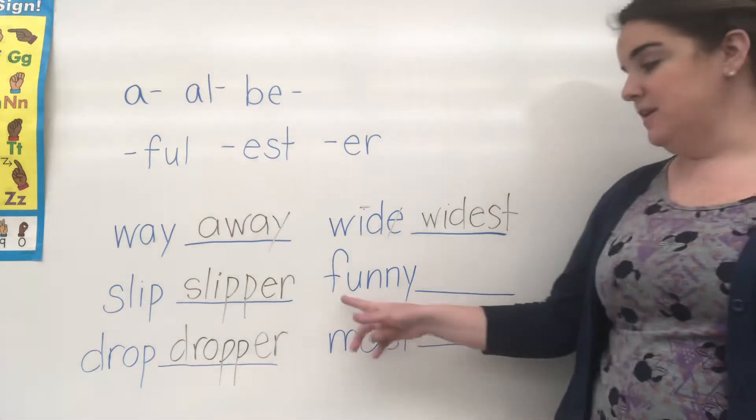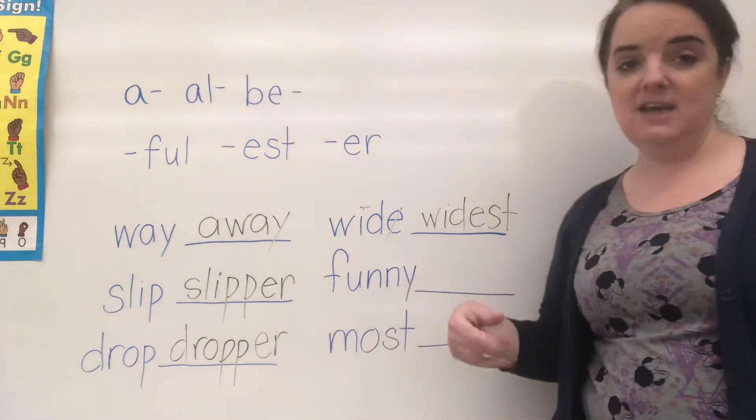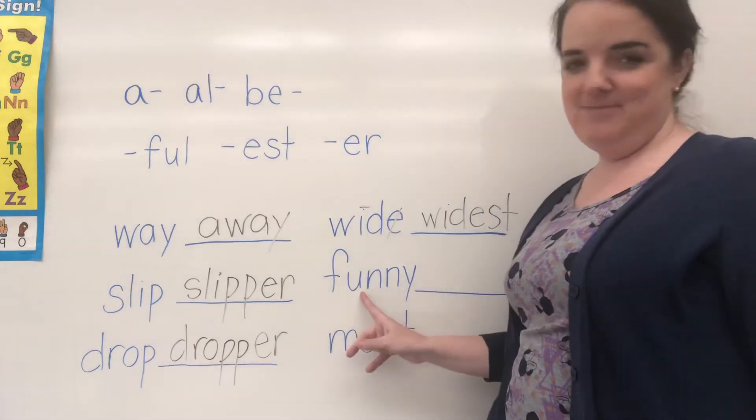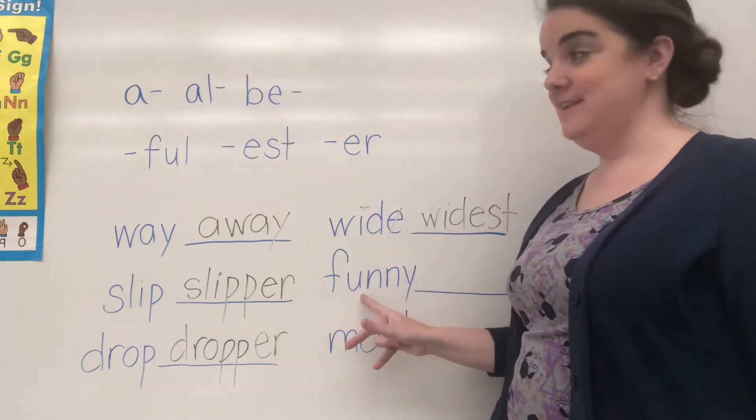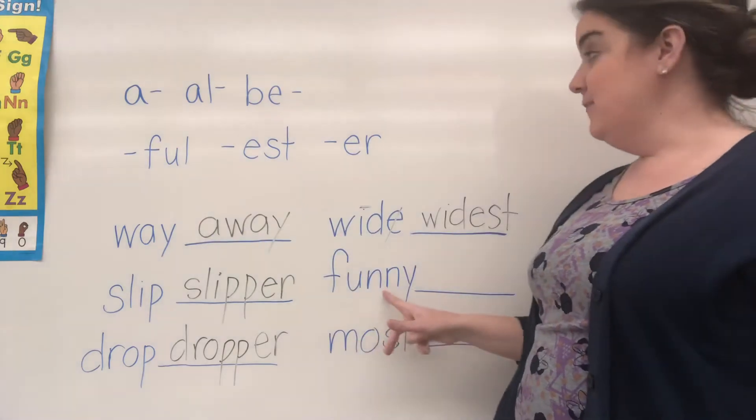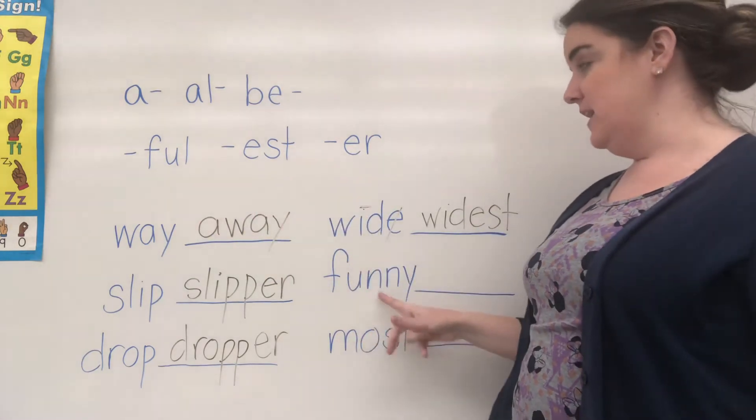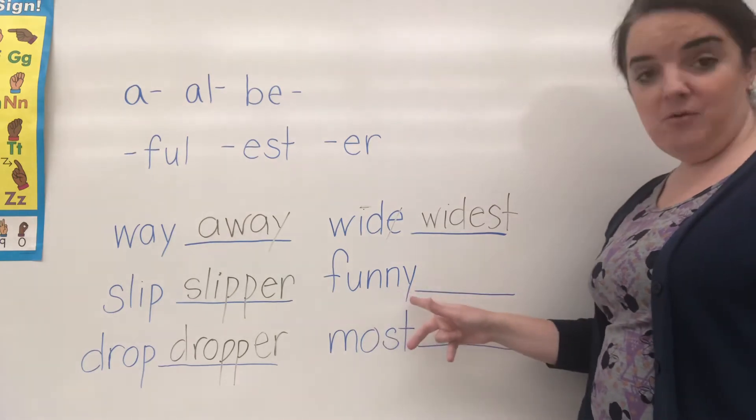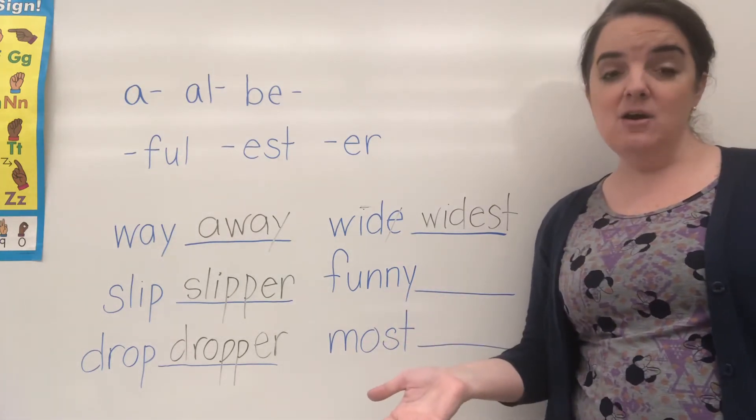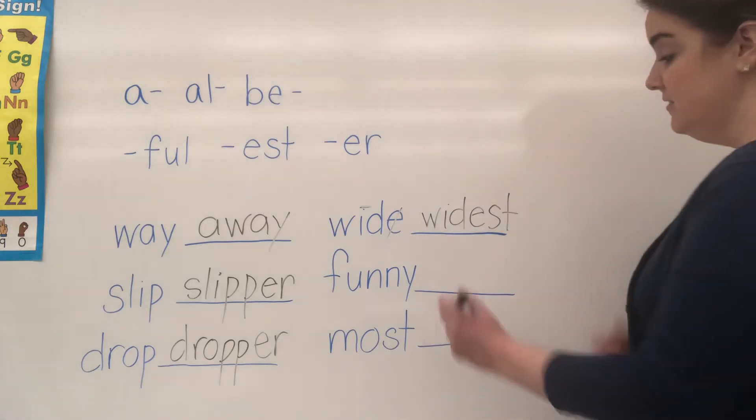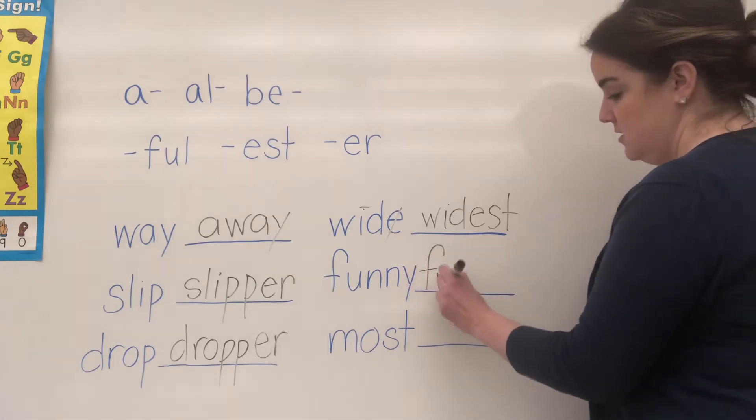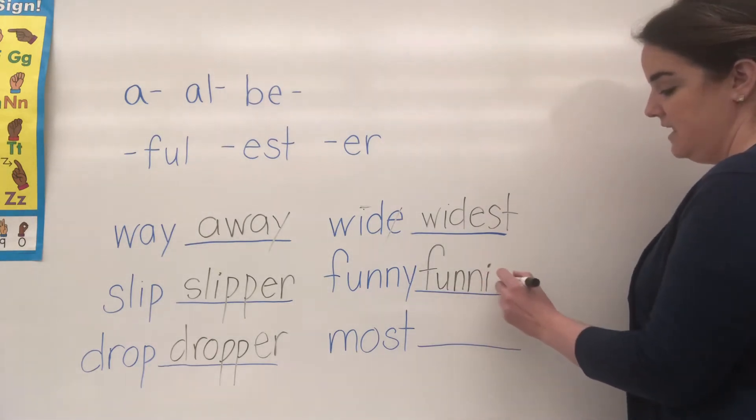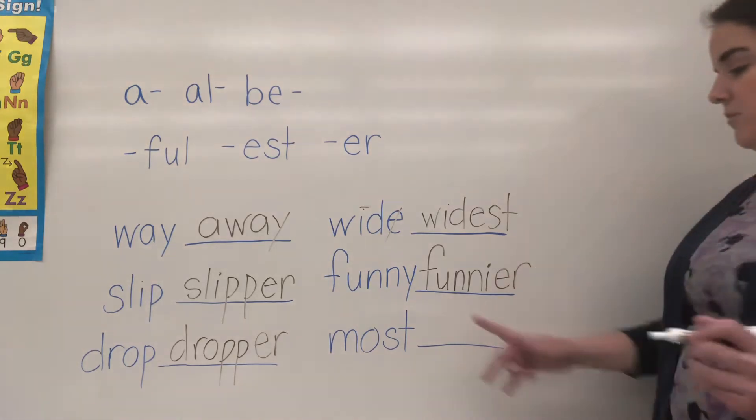Okay, let's go to our next word. Funny. Let's try a prefix. A-funny, all-funny, be-funny? No. Funny-ful? No. Funniest—we could do that, or funnier. Let's do funnier. This word funny ends with a Y. So if a word ends with a Y, we drop the Y and change it to I, then add the suffix. So F-U-N-N-I-E-R to make funnier.